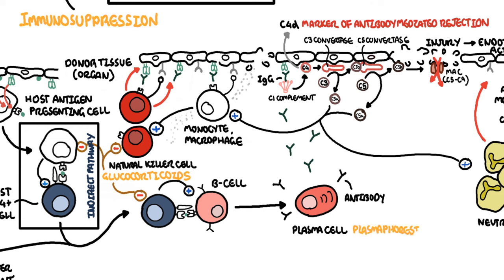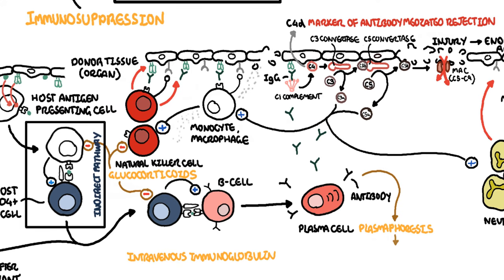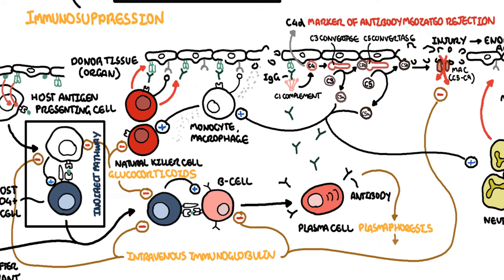Plasmapheresis removes plasma from the blood, which contains the donor-specific antibodies. The removed plasma is then replaced with a substitute. Intravenous immunoglobulins is essentially pooled antibodies given to a patient. The ultimate goal of this therapy or the mechanism is broad, but it is to normalize an immune system. The side effects of intravenous immunoglobulins include arthralgia, myalgias, and hypertension.